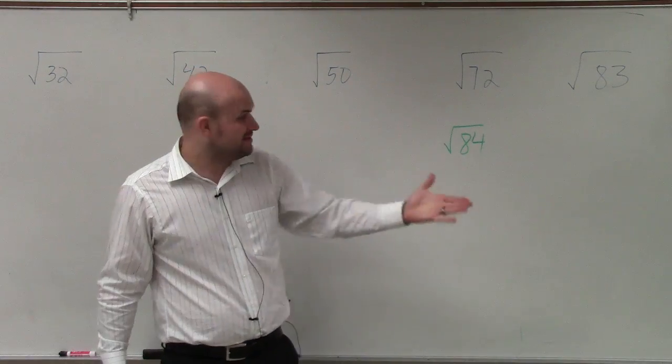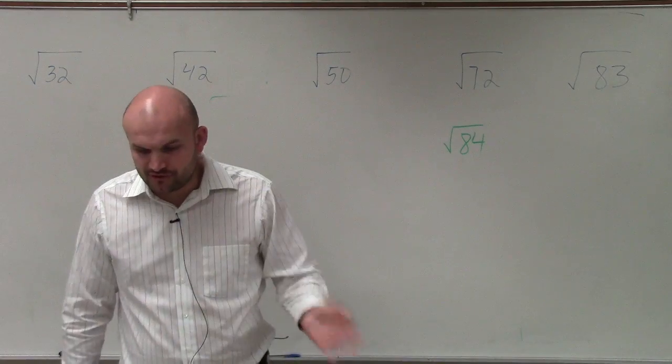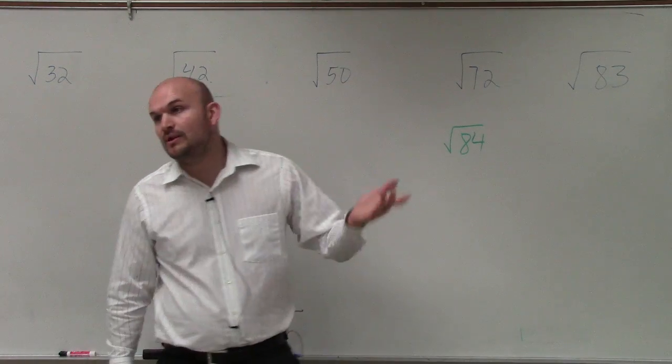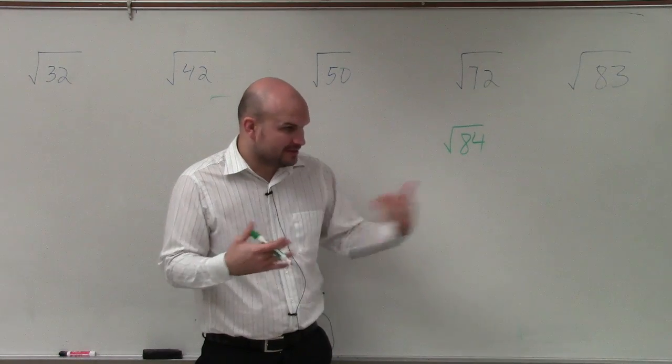So if you're going to do prime factorization, I would divide it by 2, and I'd get 42. And then I'd divide that again, and I'd get 21, and so forth. And you could keep on doing the prime factorization.